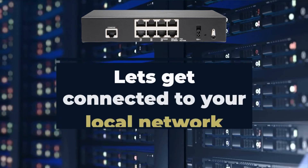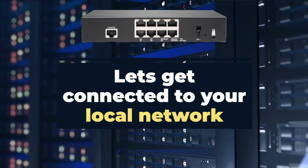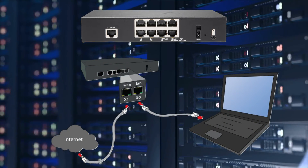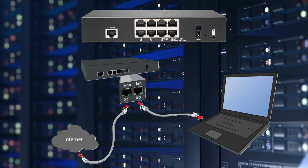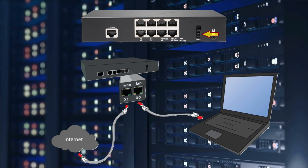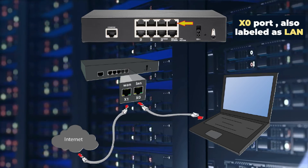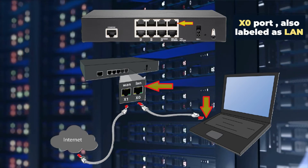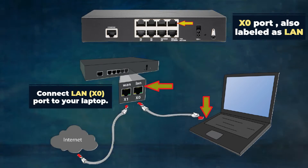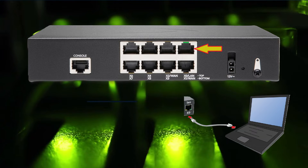First, you need to connect the SonicWall TZ270 to your network. You'll need a power cable, an ethernet cable, and a computer with a web browser. Plug the power cable into the back of the device and into a power outlet. Then, plug the ethernet cable into the X0 port on the back of the device and into your computer's ethernet port. You should see a green light on the X0 port indicating that the connection is successful.